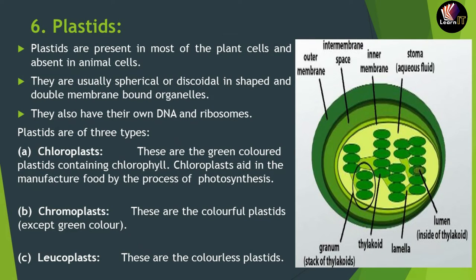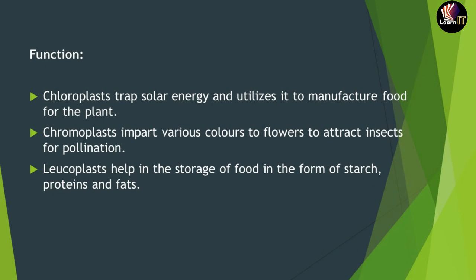Chloroplast is the main manufacturing body that helps in the process of photosynthesis, using sunlight, water, and carbon dioxide. The functions of plastids are: chloroplast uses solar energy to manufacture food for the plant in the form of sugars; chromoplast helps in attracting insects for pollination due to its different colors; and leucoplast helps in the storage of different kinds of food in the form of starch, proteins, and fats.